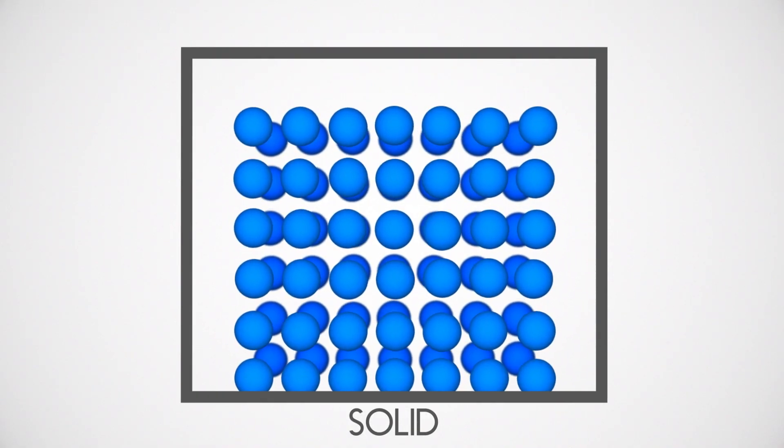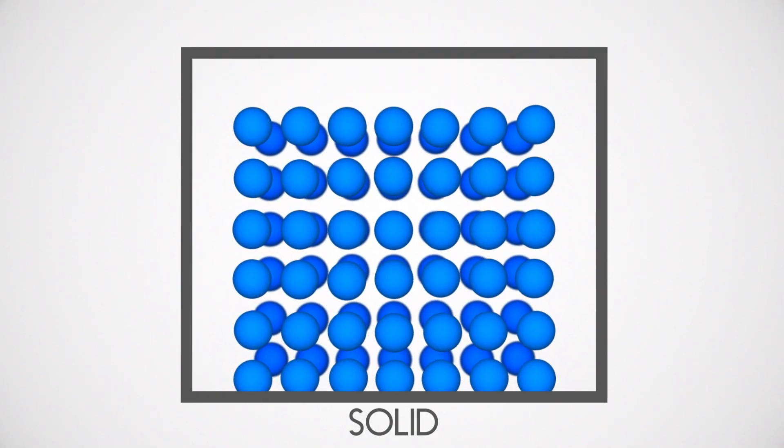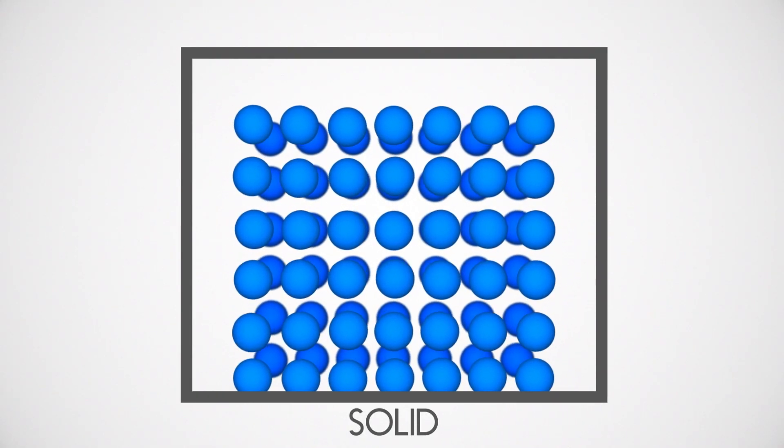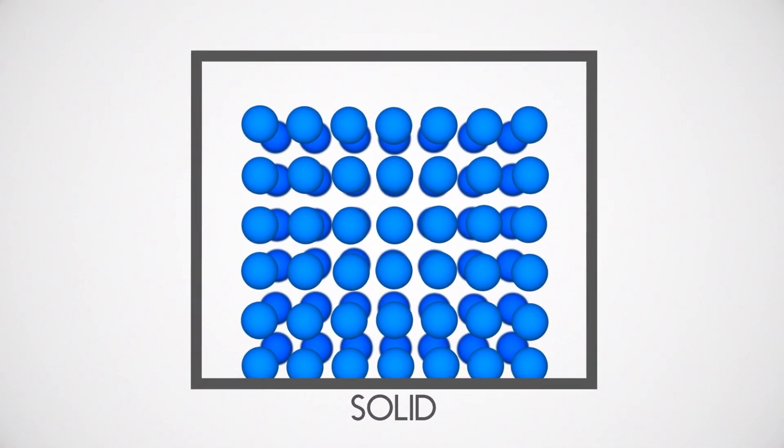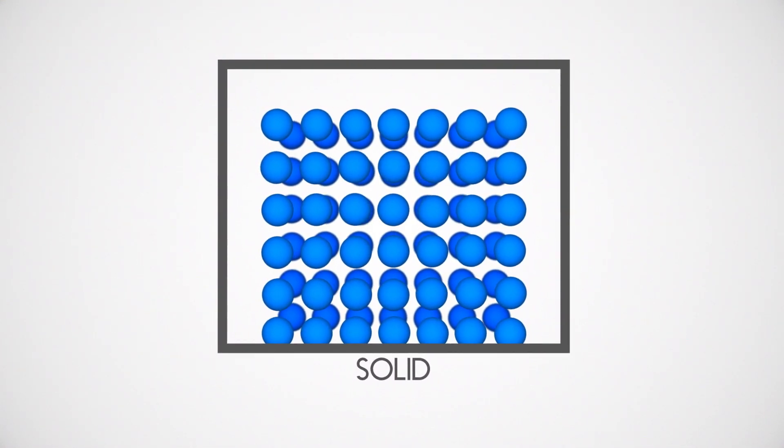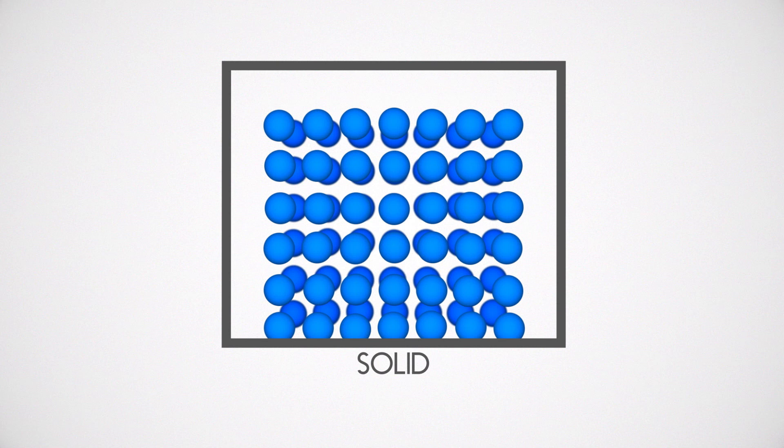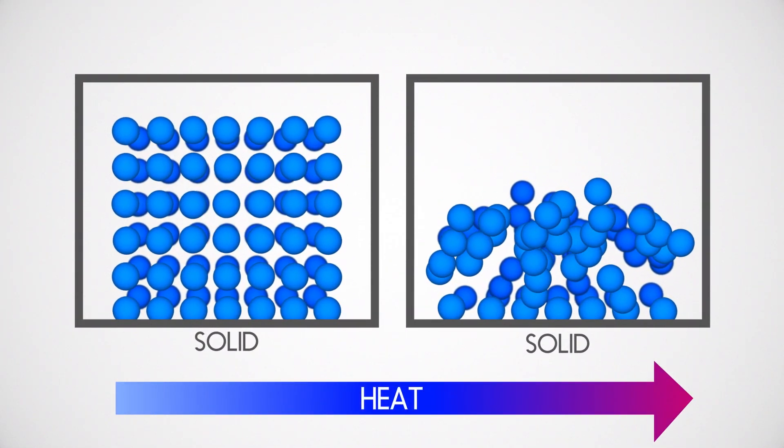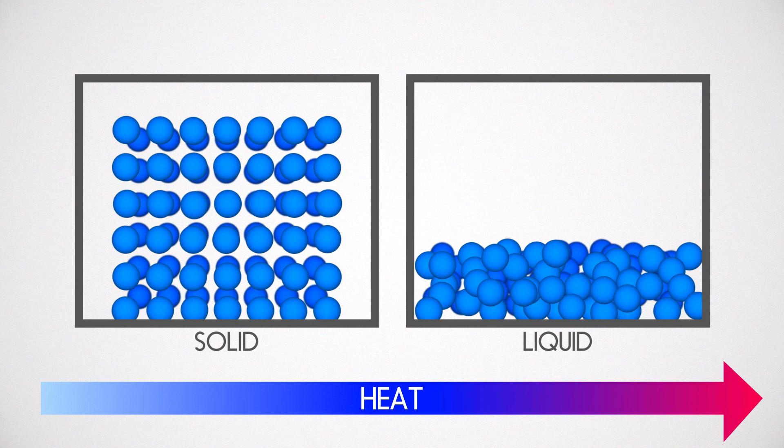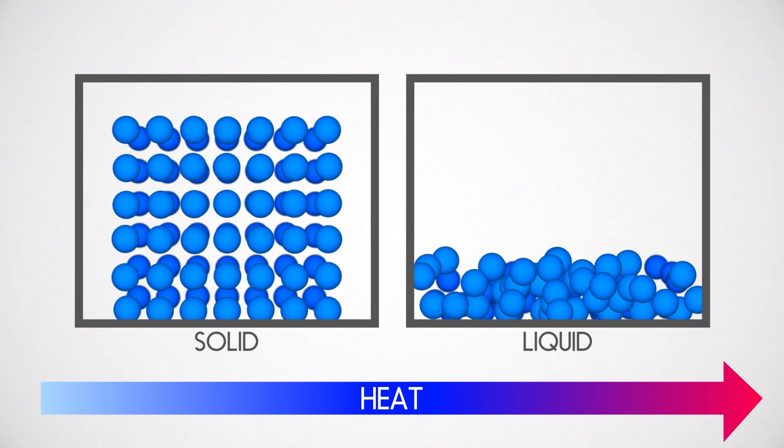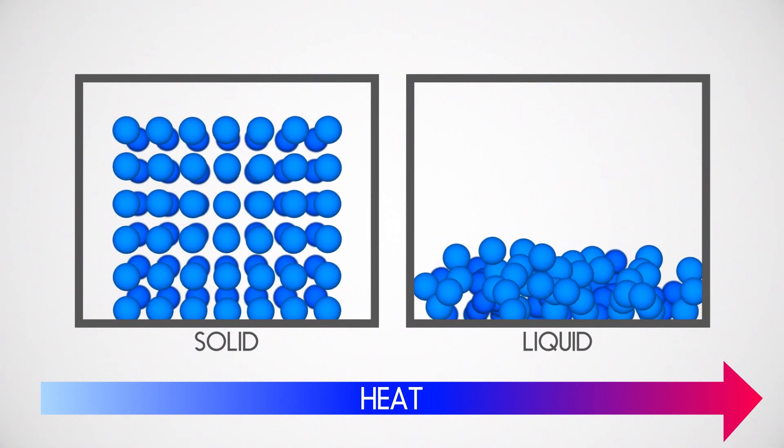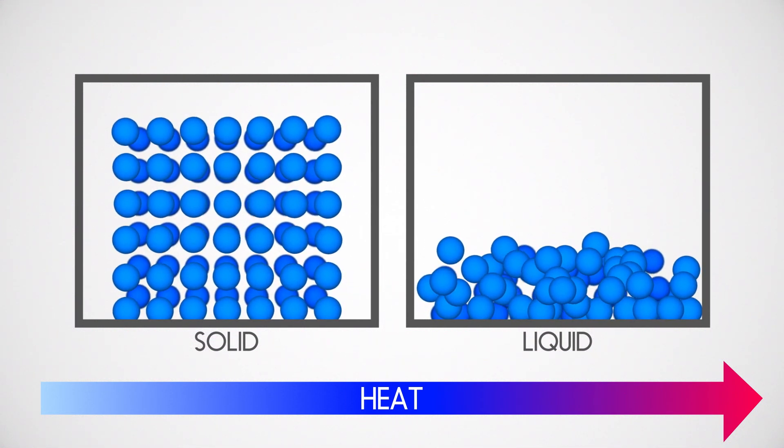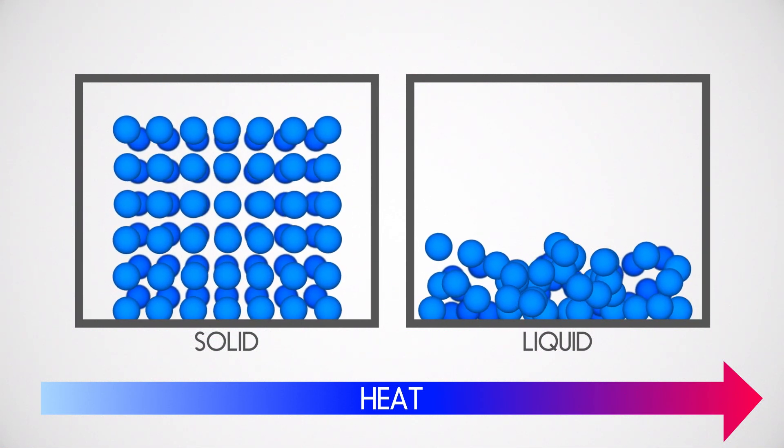Matter changes state by gaining or losing energy. If we think about a solid, in a solid the particles inside are in fairly fixed positions. They have a little bit of energy so they vibrate a bit but their positions are fixed and the solid material is rigid. Now if we heat that solid we give those particles a little bit of energy so they start moving around a bit faster and they can break away from their fixed positions. Then the substance can flow and we have a liquid.